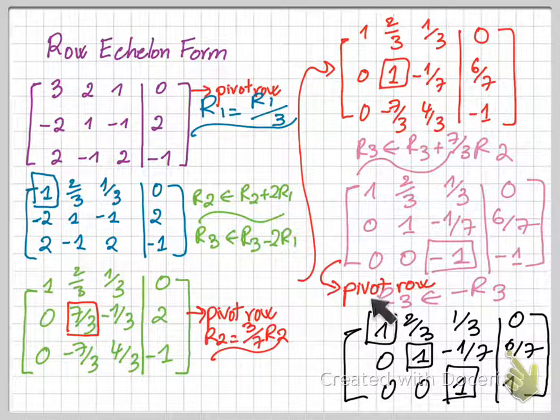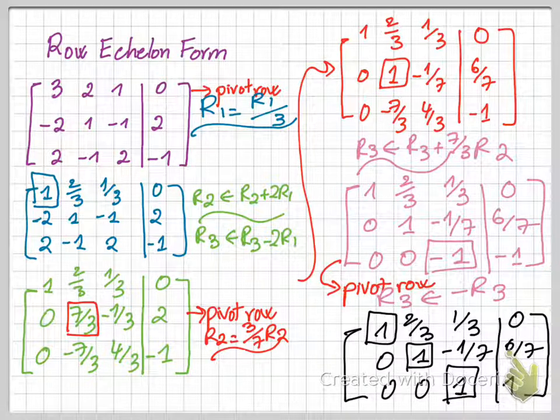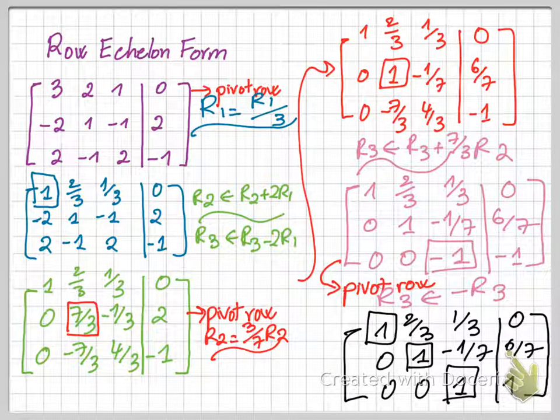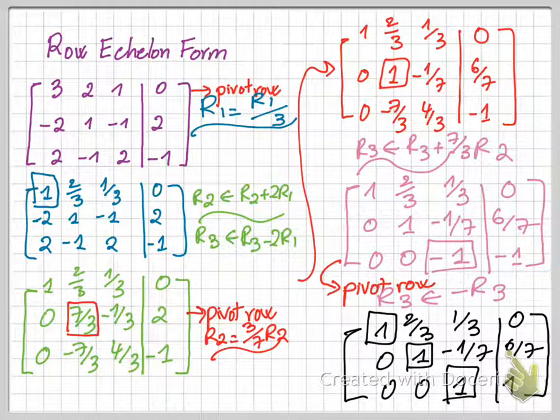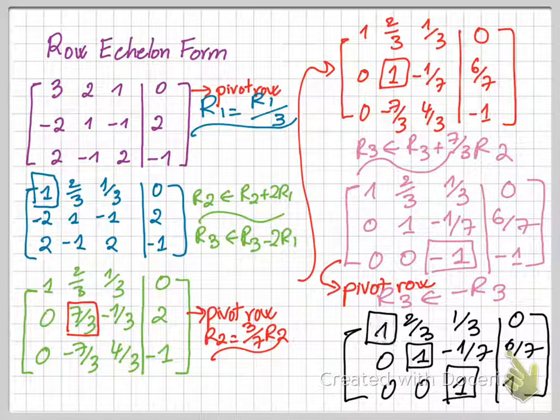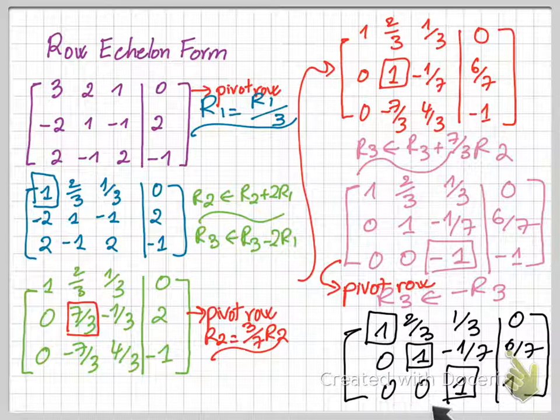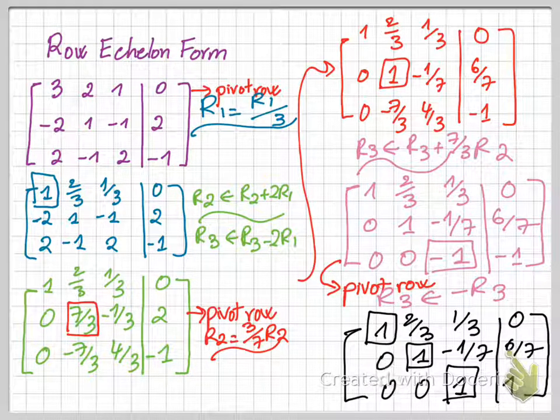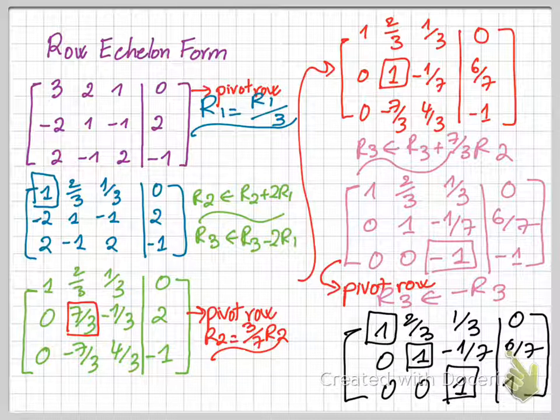And look at our matrix now. All the leading coefficients are 1, and the leading zeros of the second row is greater than the leading zeros of the first row. The leading zeros of the third row is greater than the number of leading zeros of the second row. Thus, we achieve the row echelon form of the original matrix.